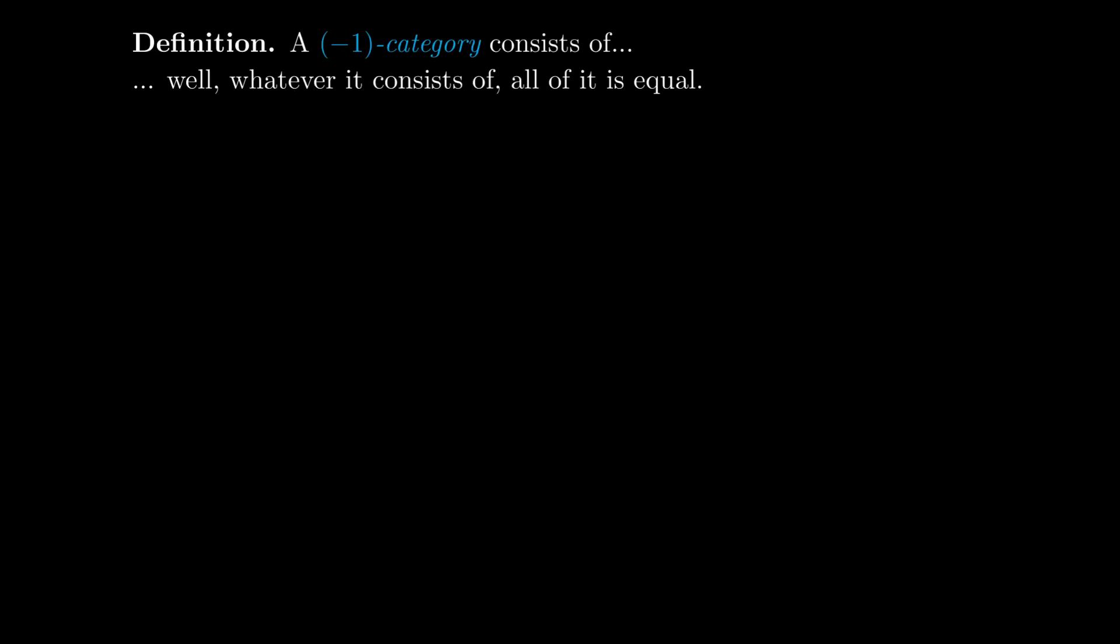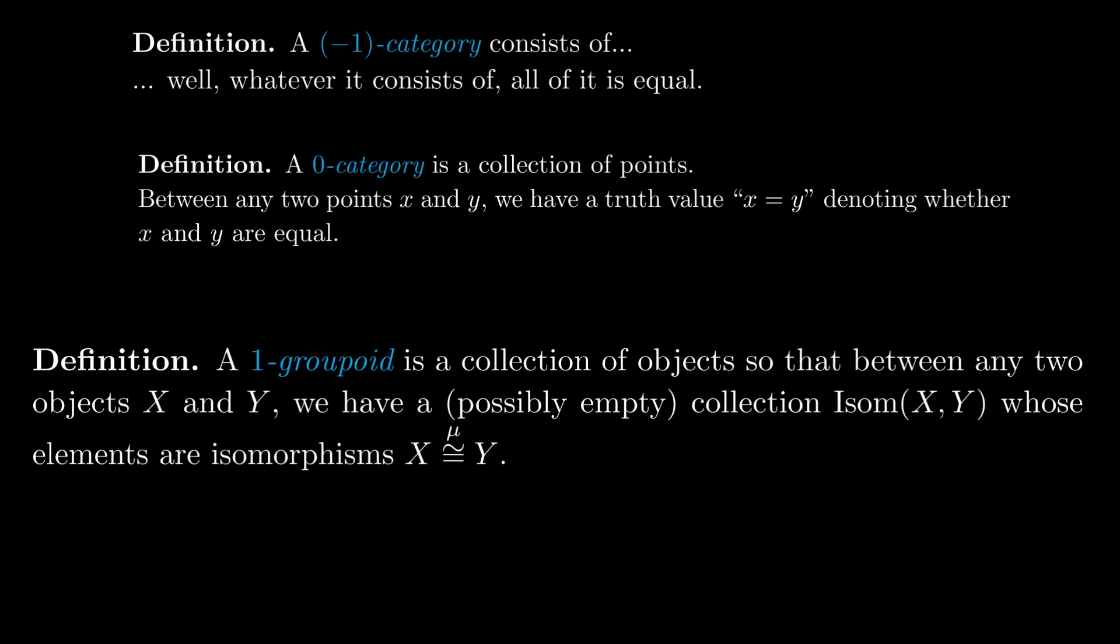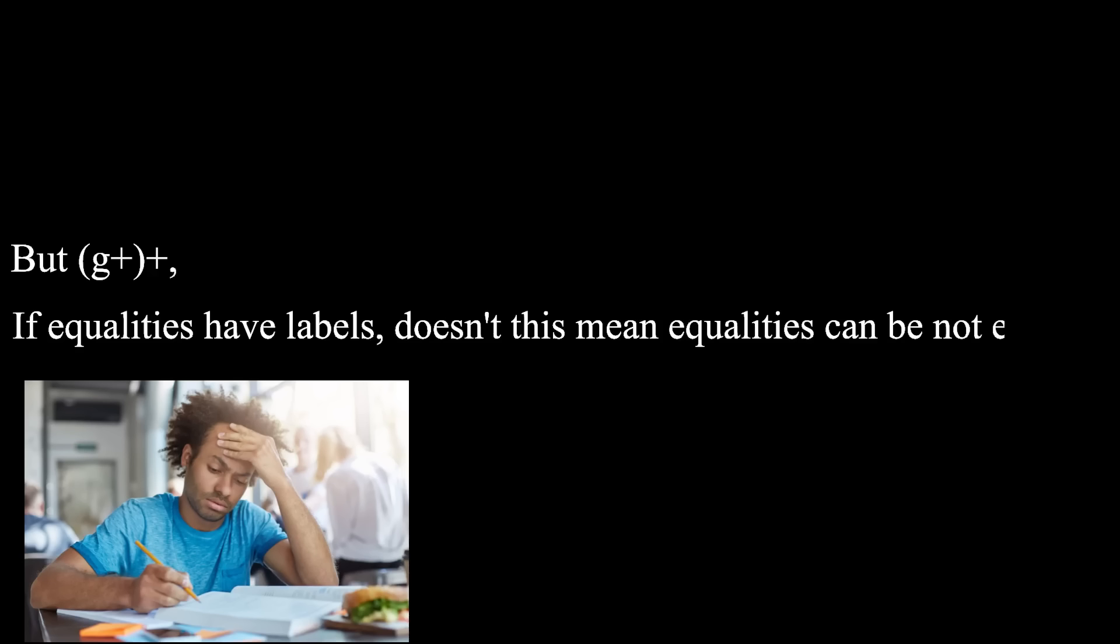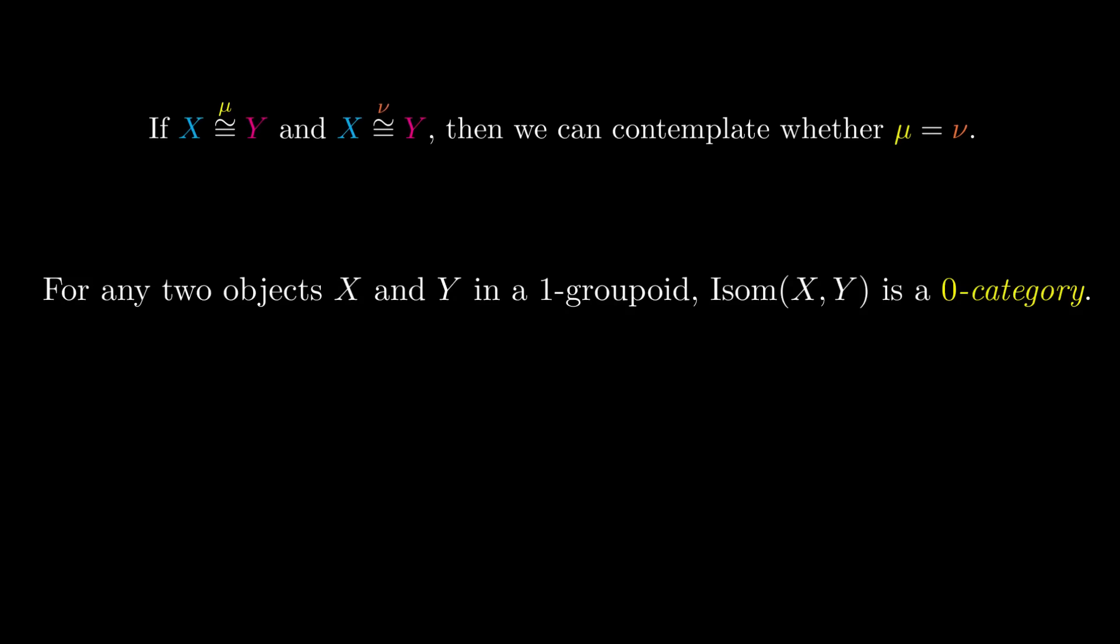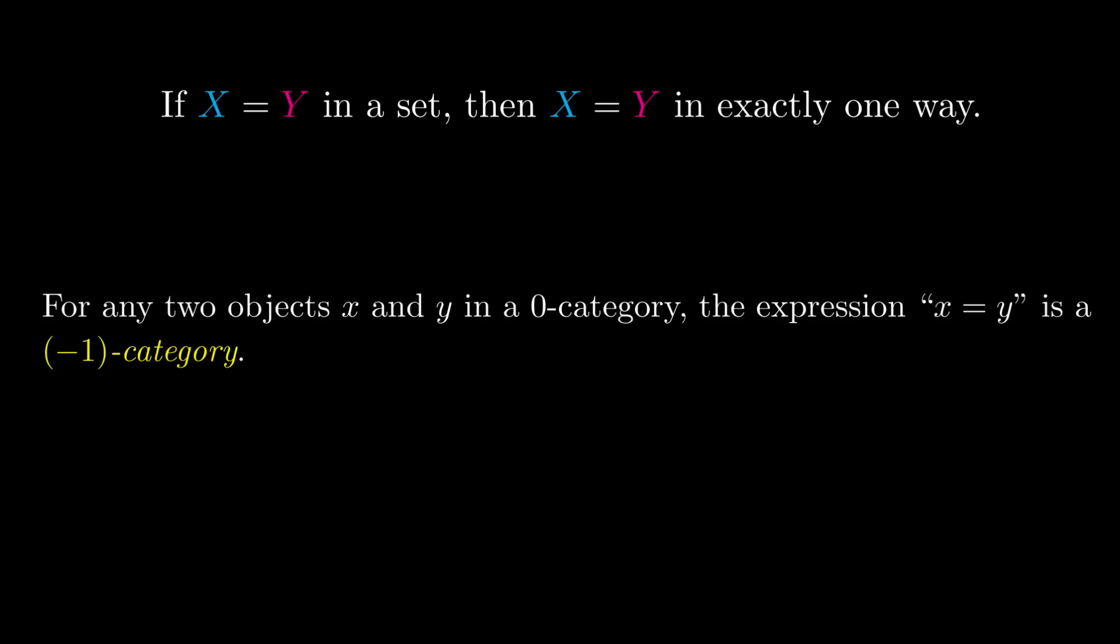So far, we have negative one categories for when everything is equal, and zero categories for when whether things are equal is given by a truth value. Naturally, now that we are annotating equality with a proof of that fact, we should call such contexts one-groupoids. In a groupoid, these annotations we put on equality are called isomorphisms, and can be thought of as a certificate or a proof that these two objects are indeed equal. But gee, I hear you say. If there are now possibly different equalities, then don't we have to think about when equalities are equal too? Indeed, in a one-groupoid, we compare isomorphisms using the classical notion of equality. In other words, for any two objects x and y in a one-groupoid, the isomorphisms between x and y form a zero category. In a similar vein, since inside a zero category, there is only one actual notion of equality, for any two objects x and y in a zero category, the expression of x equals y is itself a minus one category.